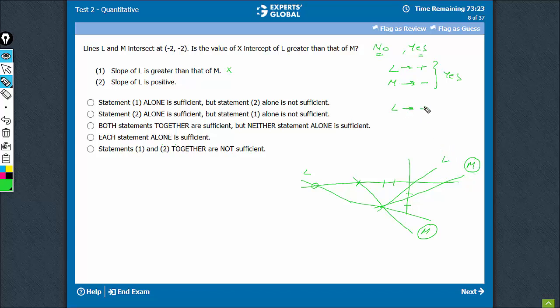When L has a positive slope and M also has a positive slope, this particular case here, then we saw that L has a lower x-intercept. In this case we are getting no as an answer. So statement 2 alone is again not sufficient on combining.